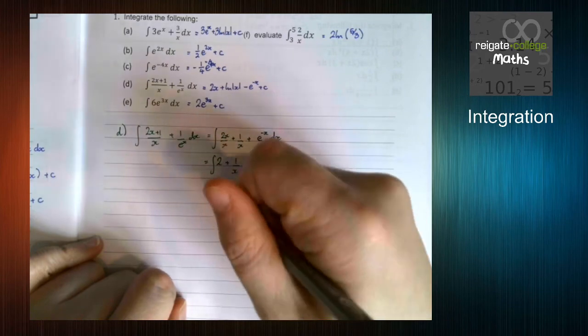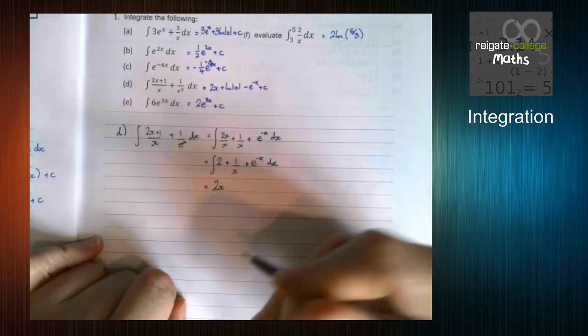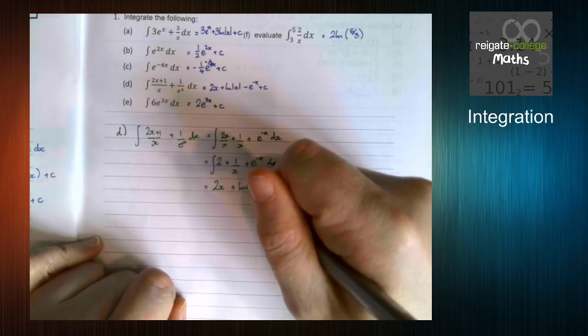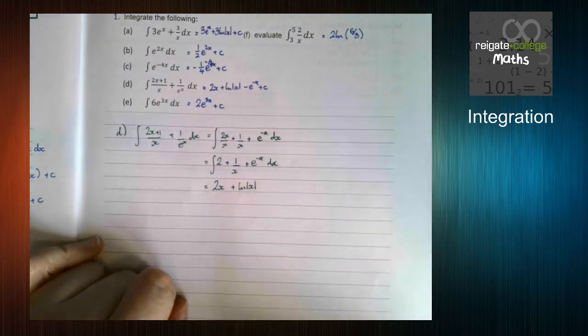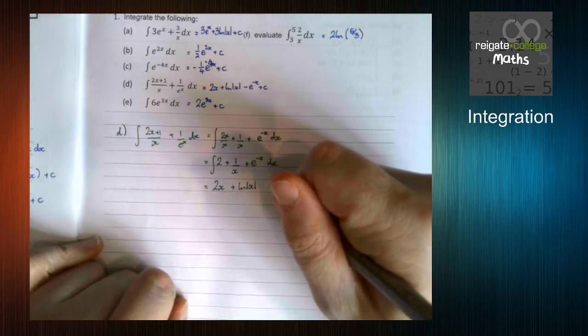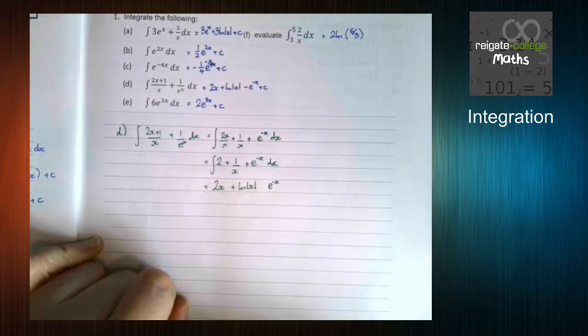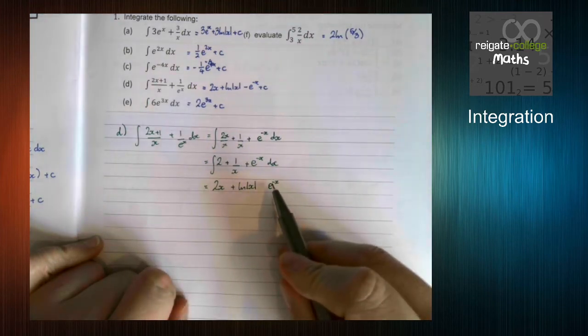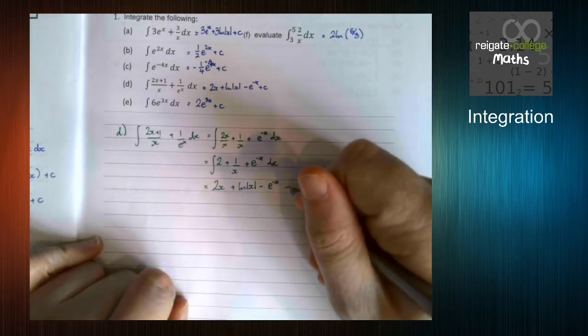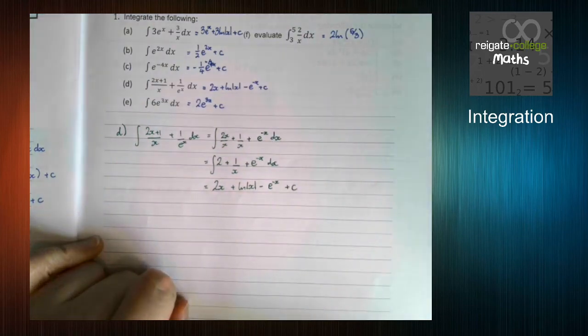Looking at each bit in turn, 2 integrates to 2x, as it always has done. 1 over x, as we've seen, integrates to ln of modulus x. e to the minus x, so the e bit always stays there. And then we divide by the coefficient of x. In this case, the coefficient of x is minus 1. And don't forget the plus c.